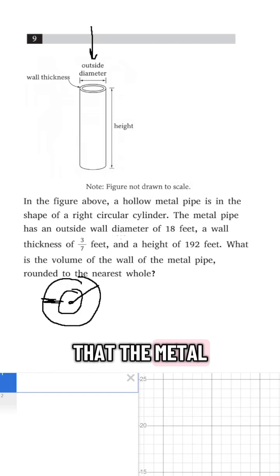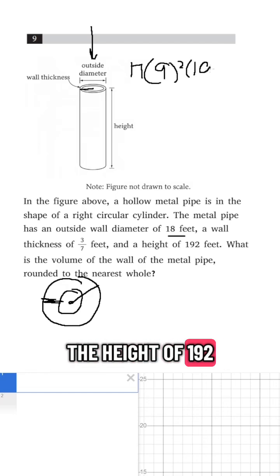Well, I was told that the metal pipe has an outside wall diameter of 18 feet, so that just means that the total radius is going to be 9, so it would be π times 9 squared times the height of 192.